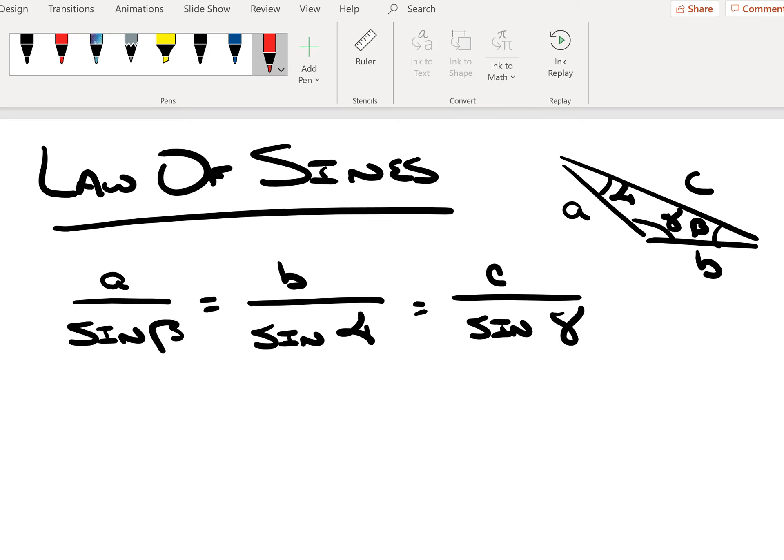As long as I take a side and divide it by the sine of the angle opposite to it, we see here that side A is opposite to angle beta, side B is opposite to angle alpha, and side C is opposite to angle gamma.